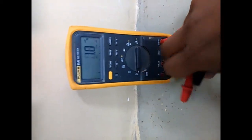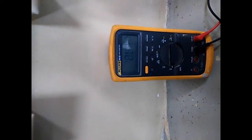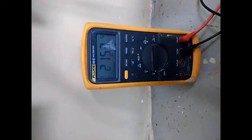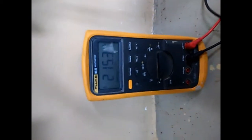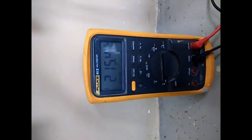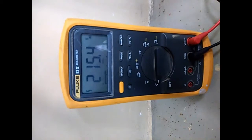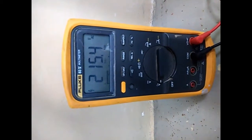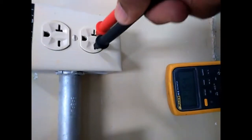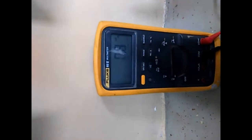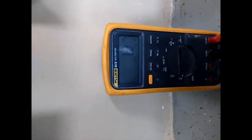See, before it is zero. Now I put it in the socket, and it shows 220V. This is the way to measure the voltage in the socket. If I remove it, it will be zero. Now I am removing it—it is zero. Same way, we will check for 120V.